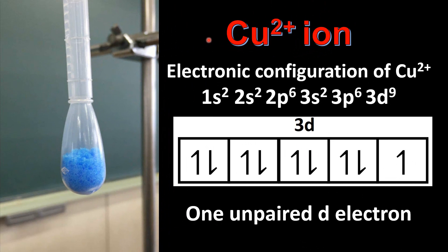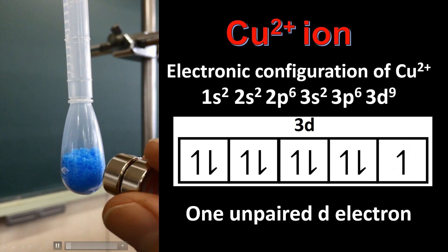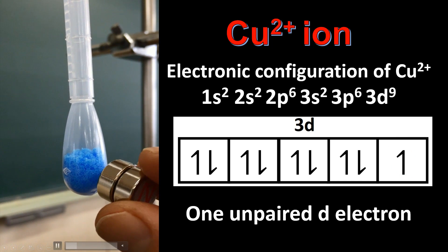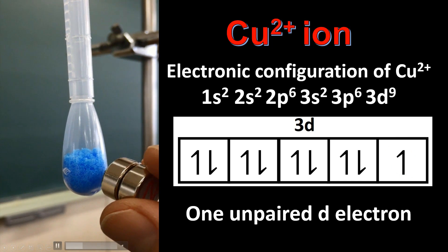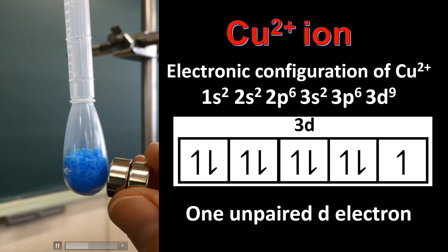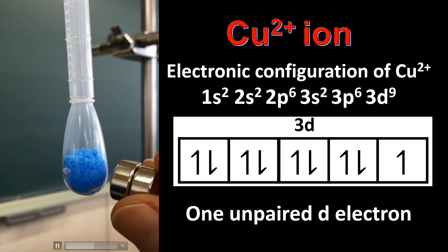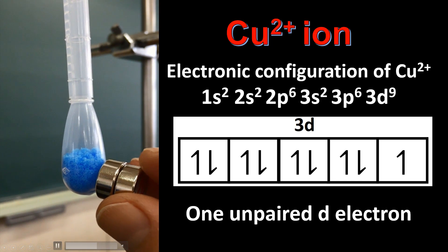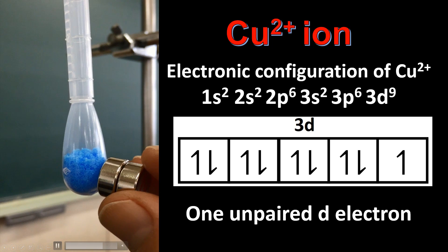Next we'll look at the copper 2+ ion. Here we have the electronic configuration of the Cu²⁺ ion and as you can see from the orbital diagram it has one unpaired d electron, which is this one here. Let's look at the effect of an external magnetic field on the sample of copper sulfate. As you can see there is a weak attraction between the magnet and the sample.